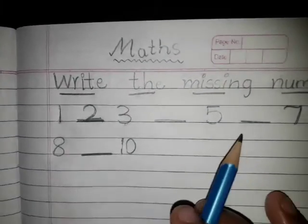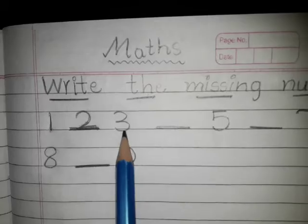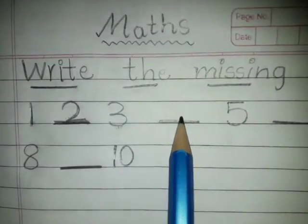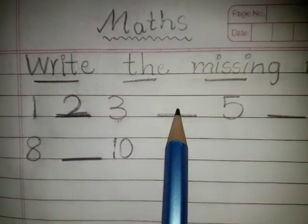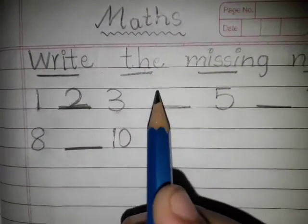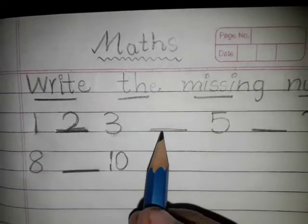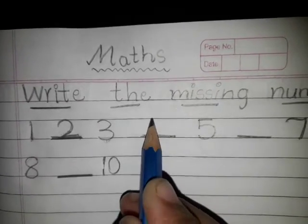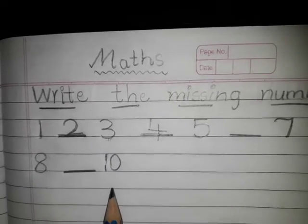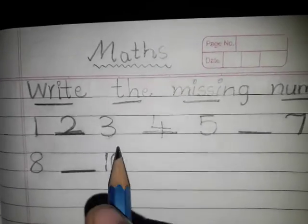We will move to next. Between 3 and 5, which number is missing here children? Yes, number 4. How to write number 4? Yes, very good. Like this you have to write. Okay, now,